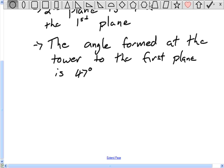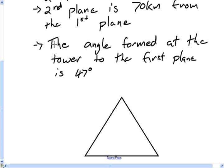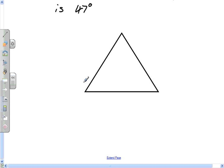A second plane is 70 kilometers from the first plane, and the angle formed at the tower to the first plane is 47 degrees. So let's create this. If you're one of the guys who has a blank quiz right now, the first question is different.